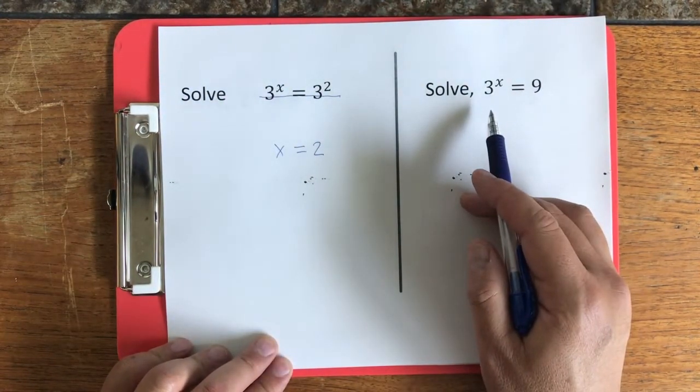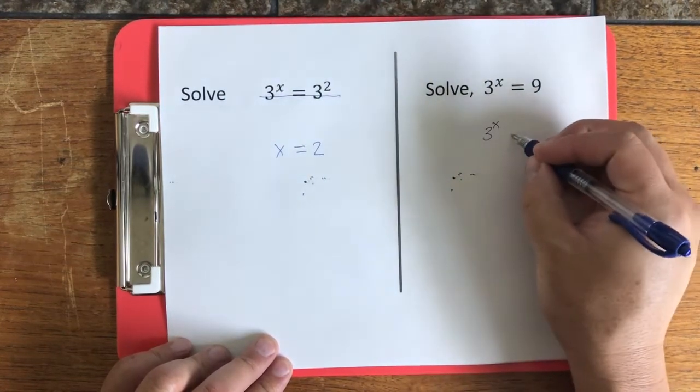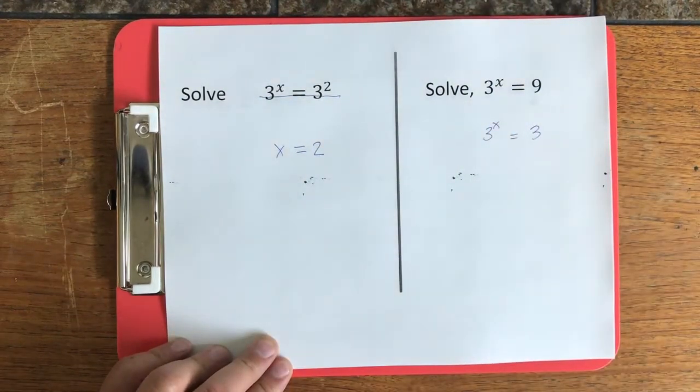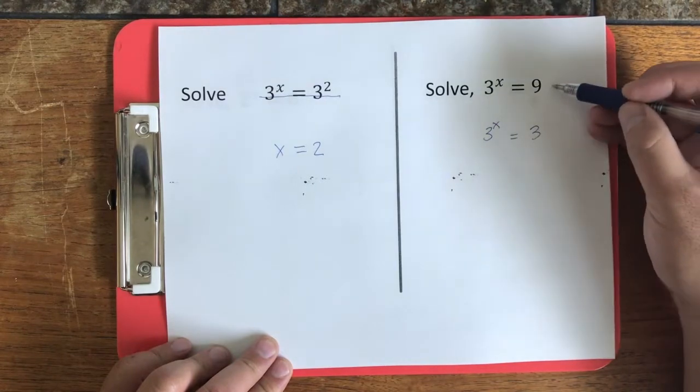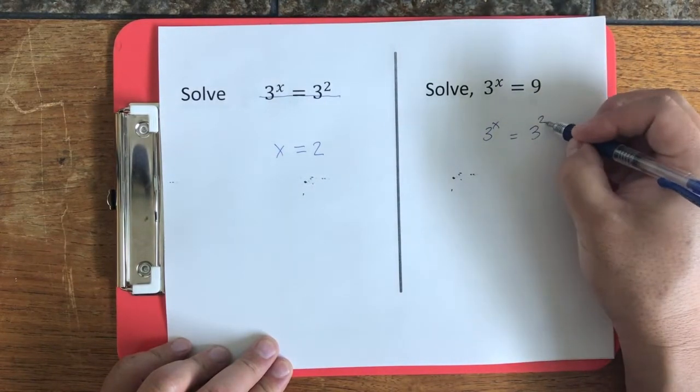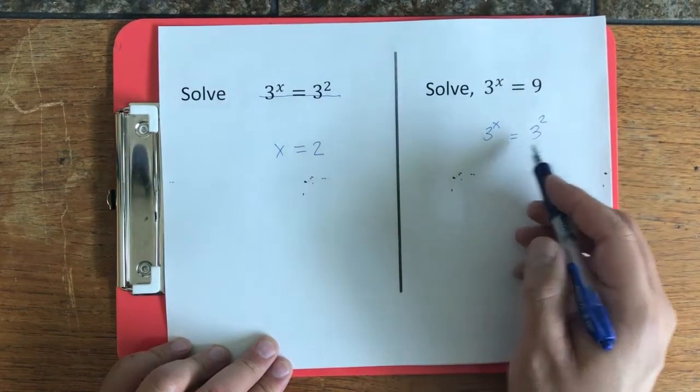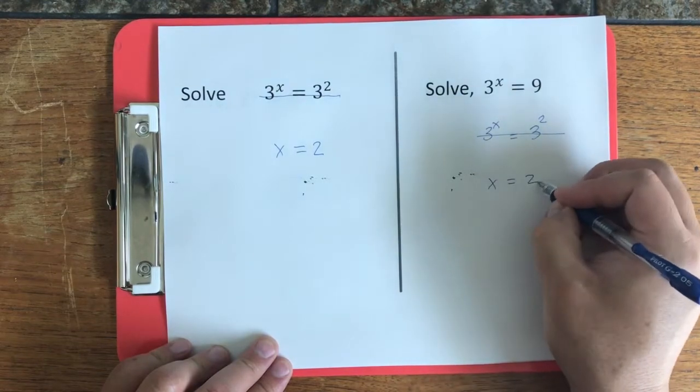So when we have a problem like this, what we want to do is make it so the right side has a number with the same base. Now, if you were to ask me 3 to the what power is equal to 9, the answer would be 2, right? 3 squared is equal to 9. Now that the bases are the same, we can just cross them out and have x equal to 2.